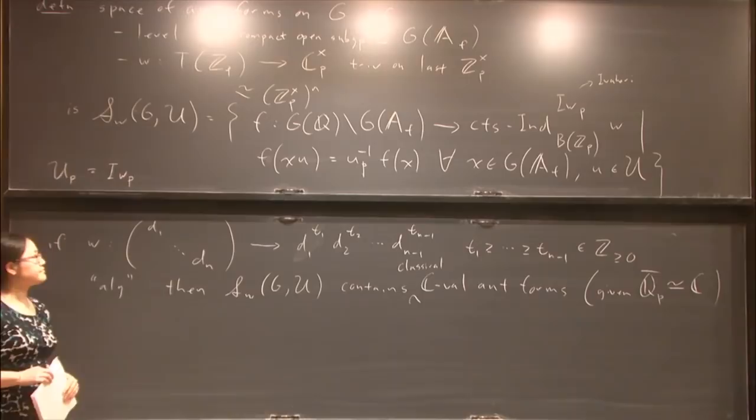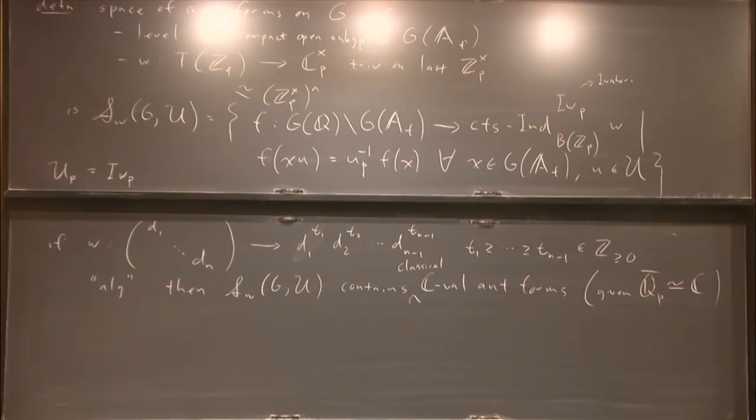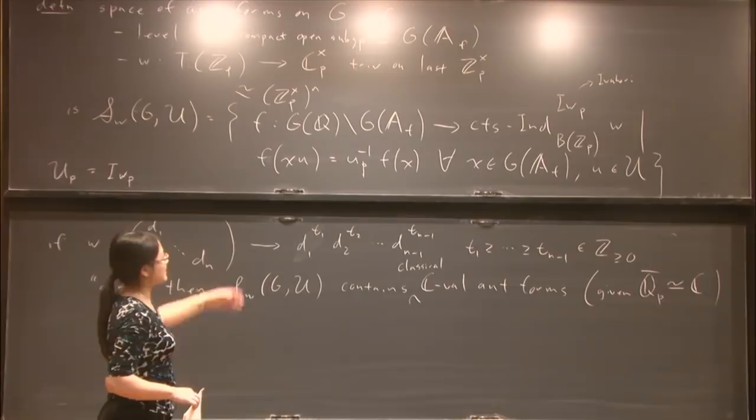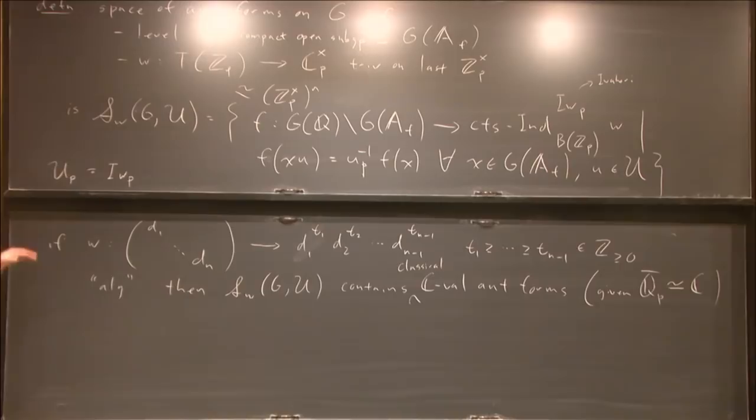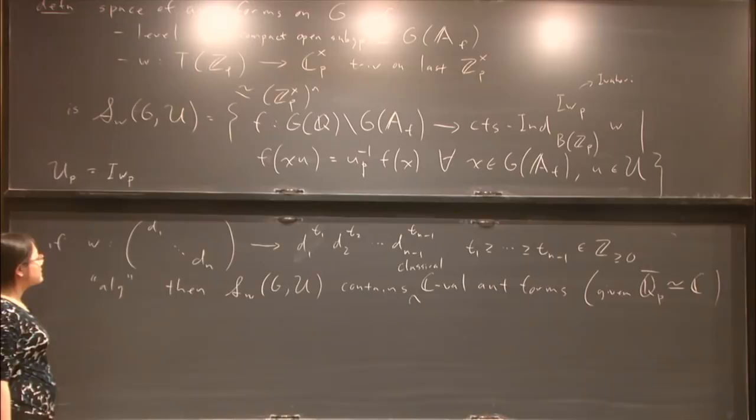If G satisfied strong approximation, then G(Q) would be dense in G(A_f) and there would be no non-trivial continuous functions on G(Q)\G(A_f), so you couldn't write down this non-standard definition. Because G is compact at infinity, we can do this. Next we want Hecke operators acting on our spaces of automorphic forms.